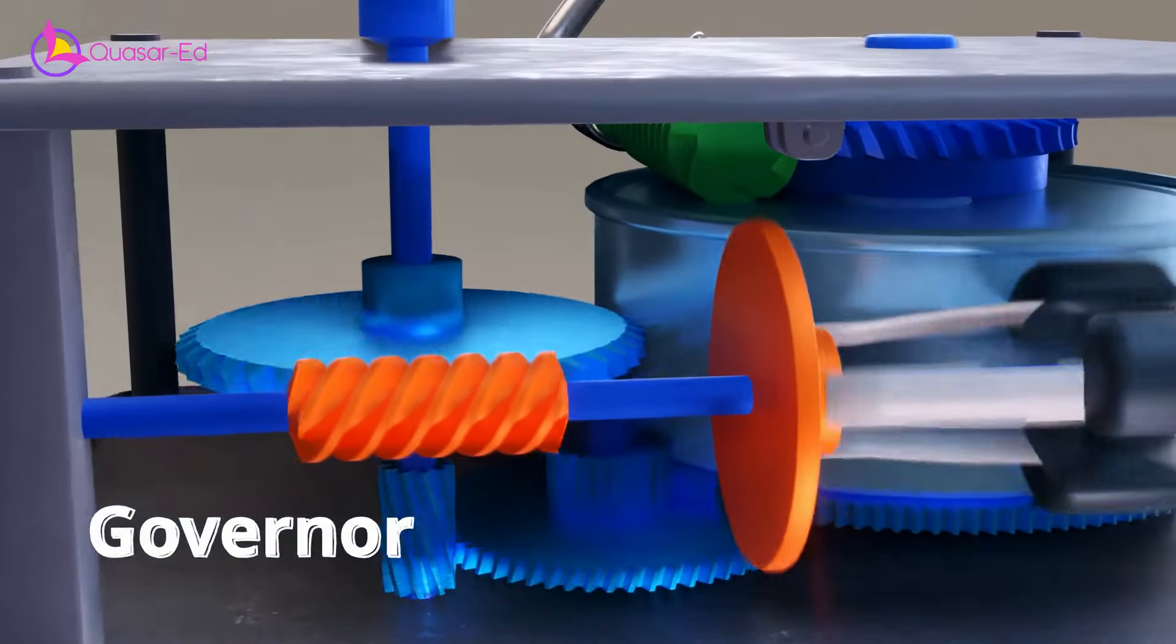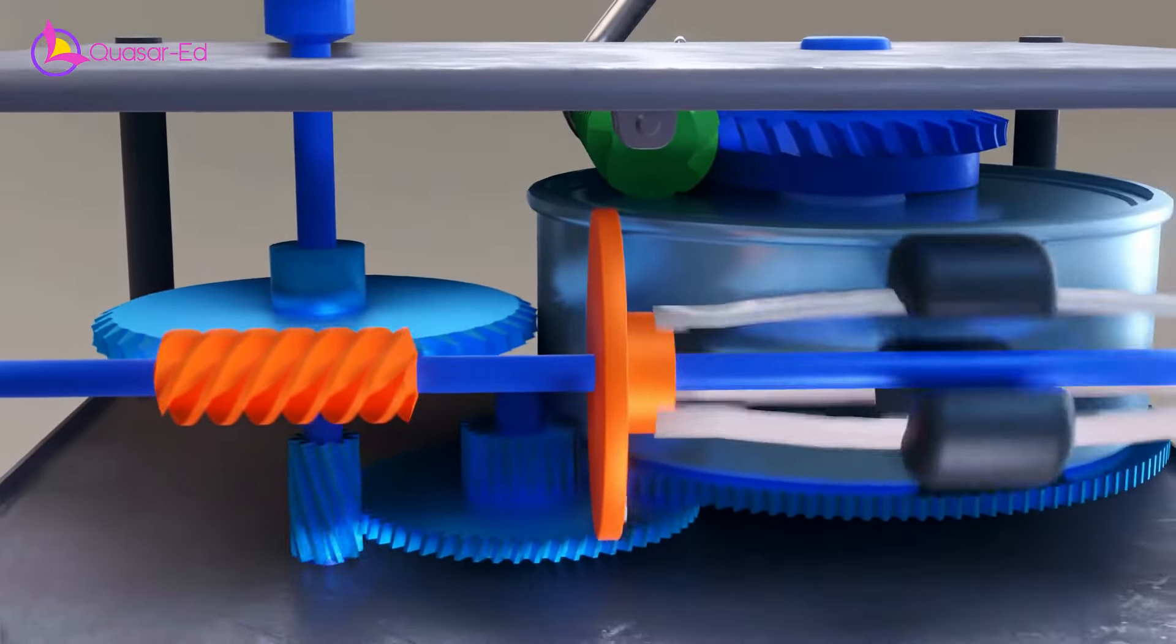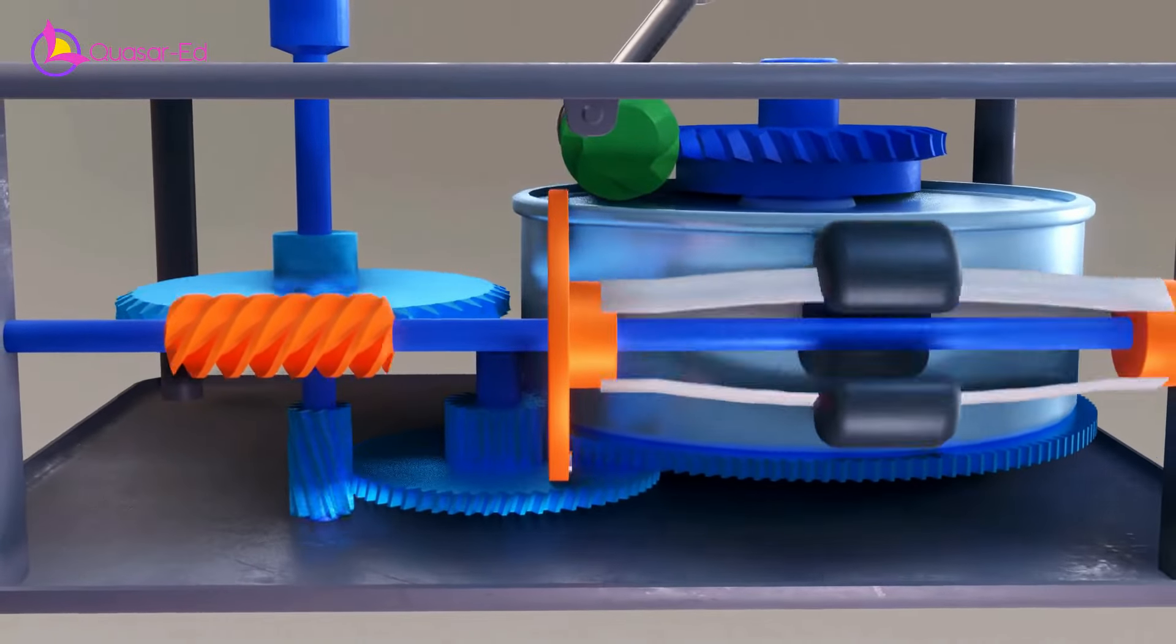It is just a shaft with hanging weights, and it is connected to the spindle by a worm gear set, which will limit the spindle rotation speed.